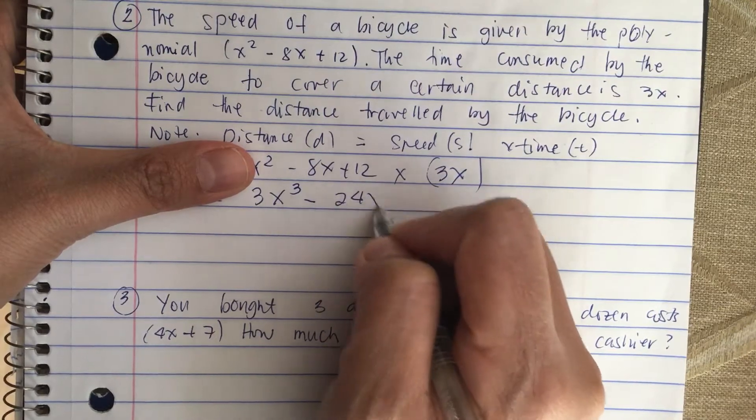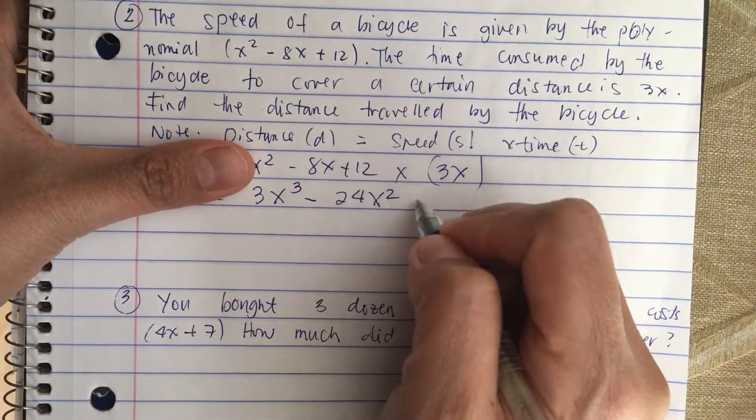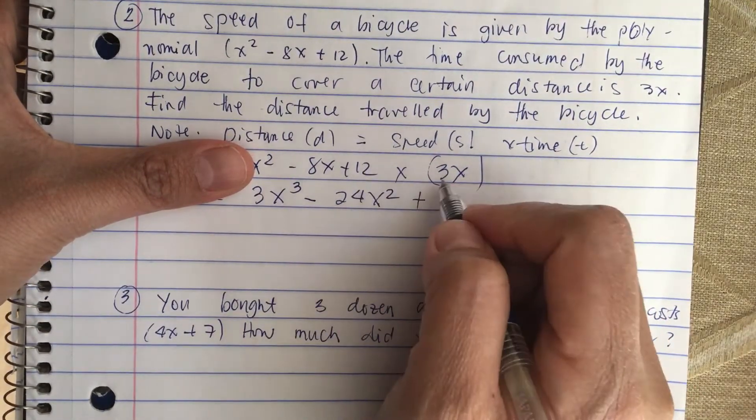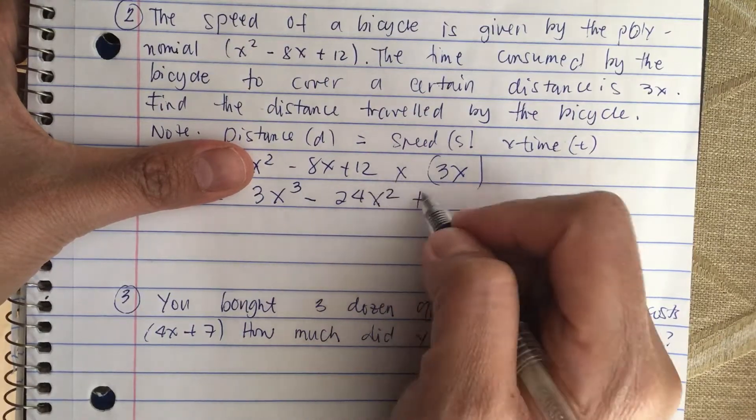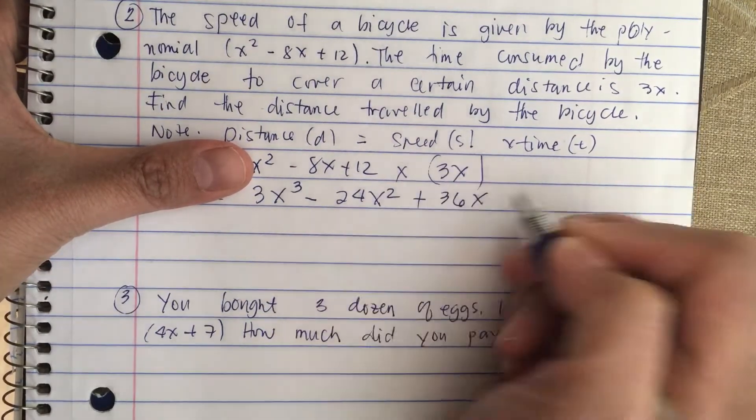And then plus 12 times 3x is equal to 36x.